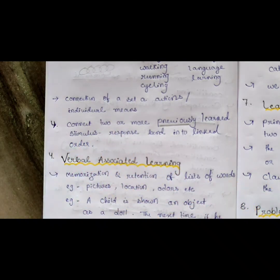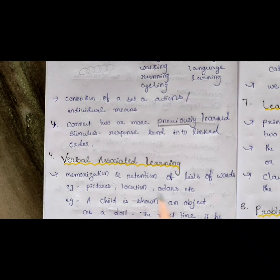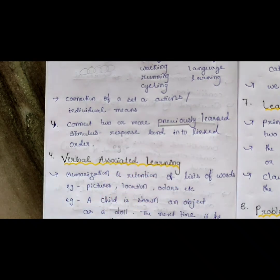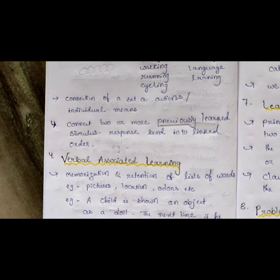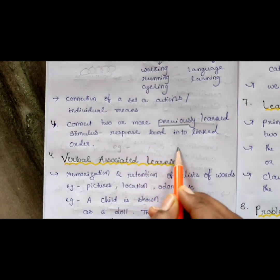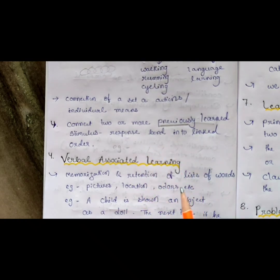For example, to ride a bicycle you need to first learn how to hold things, how to pedal, and many other individual skills. A child cannot suddenly start riding a bicycle — previously learned actions must be connected together. That connection of prior learning is chain learning.